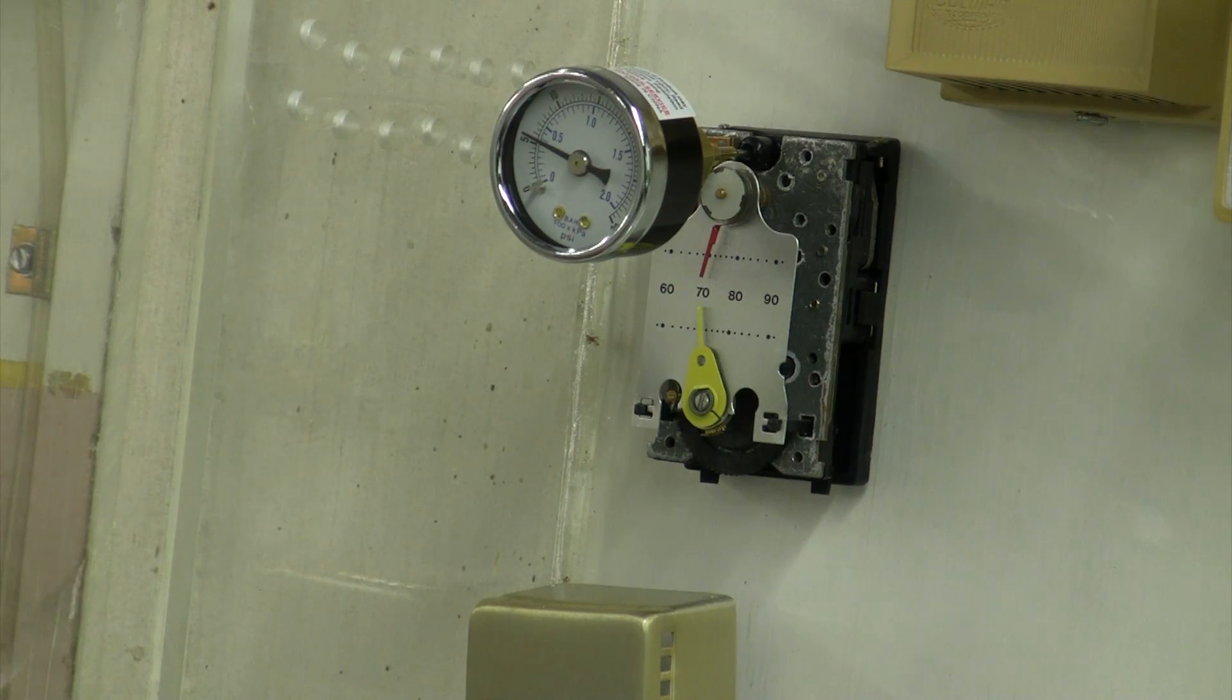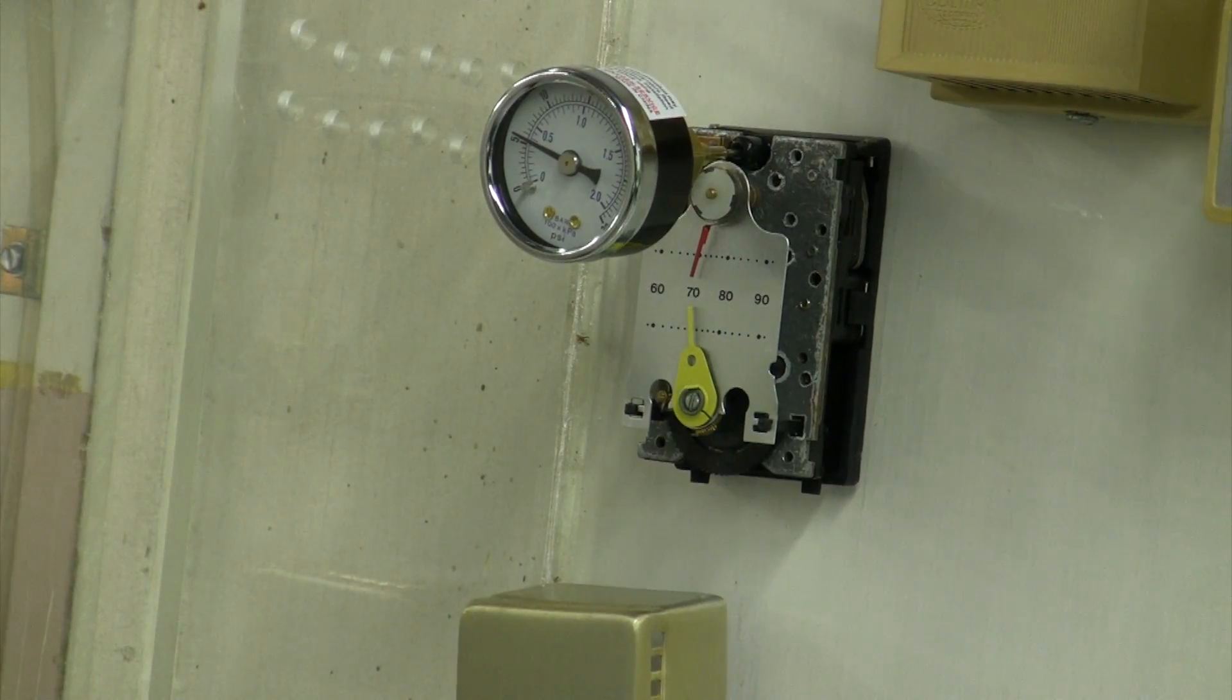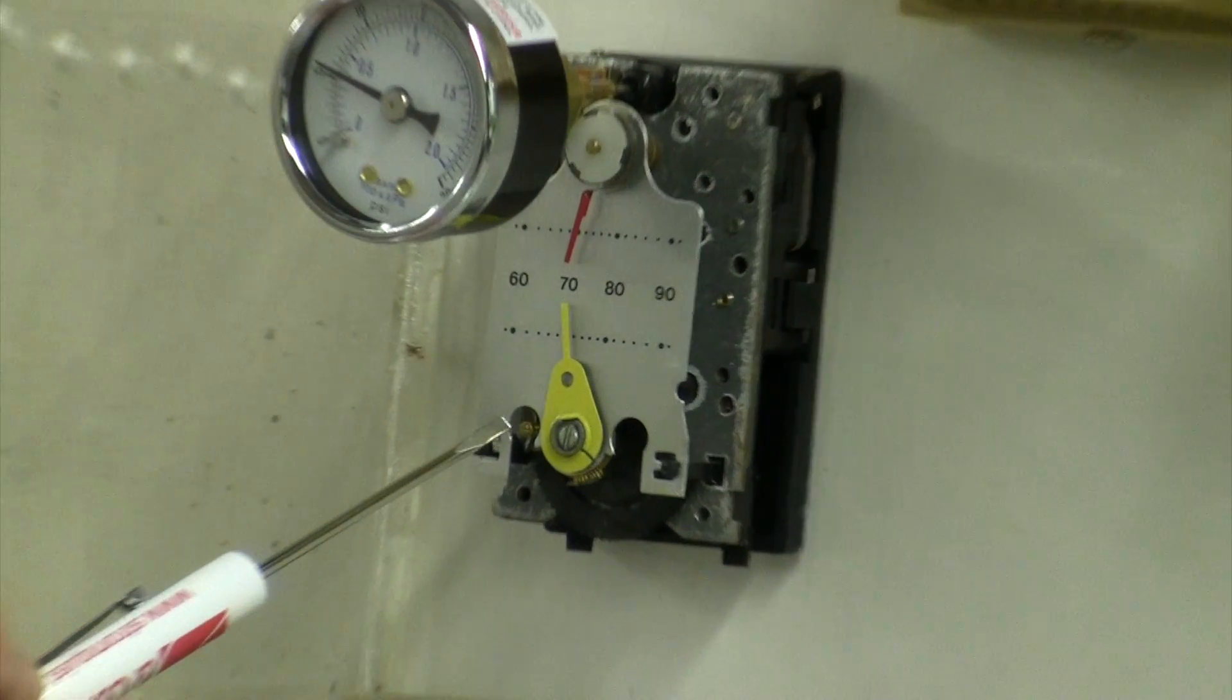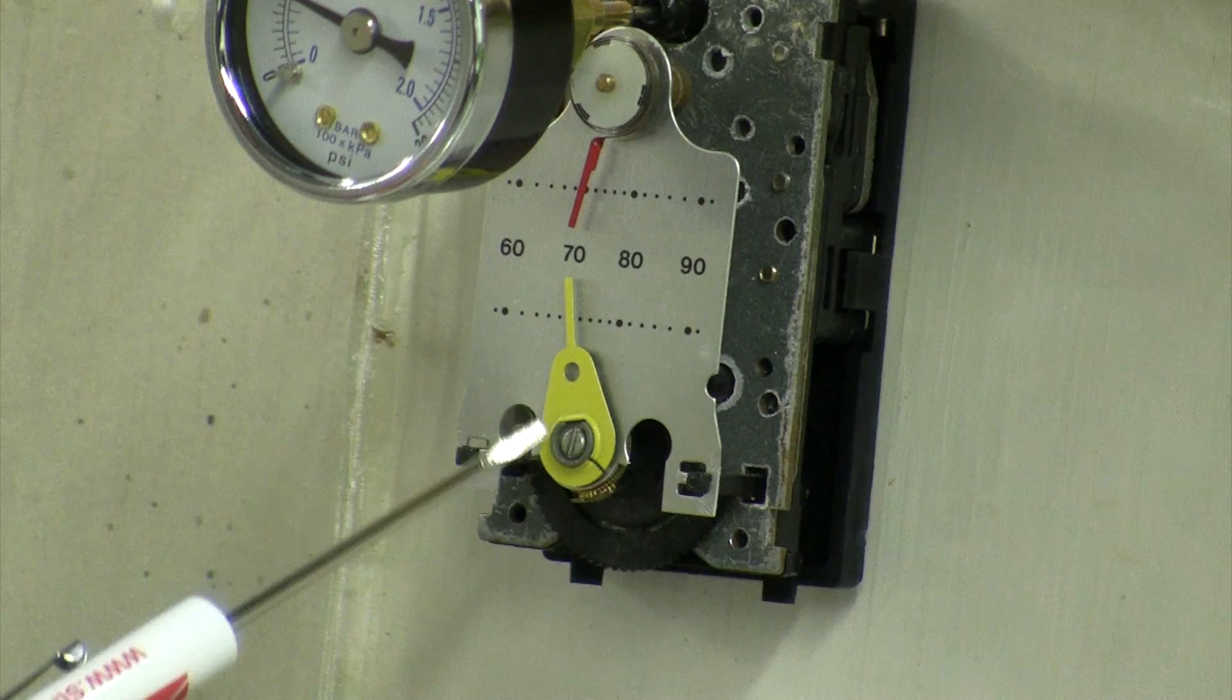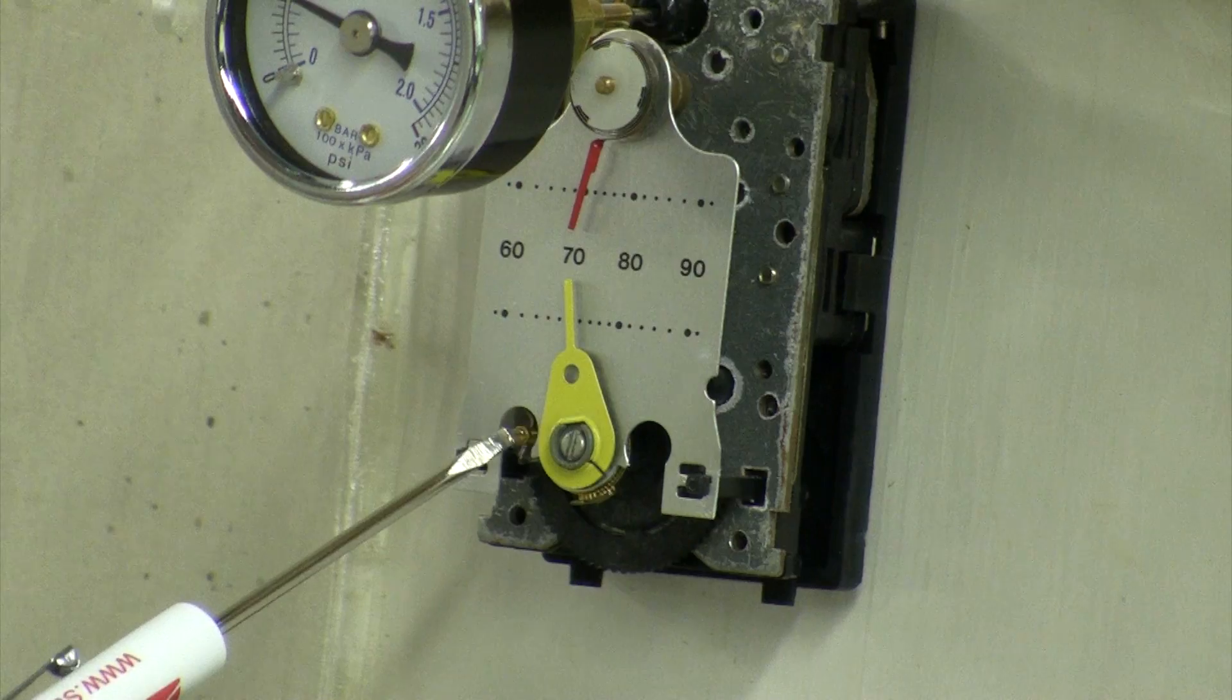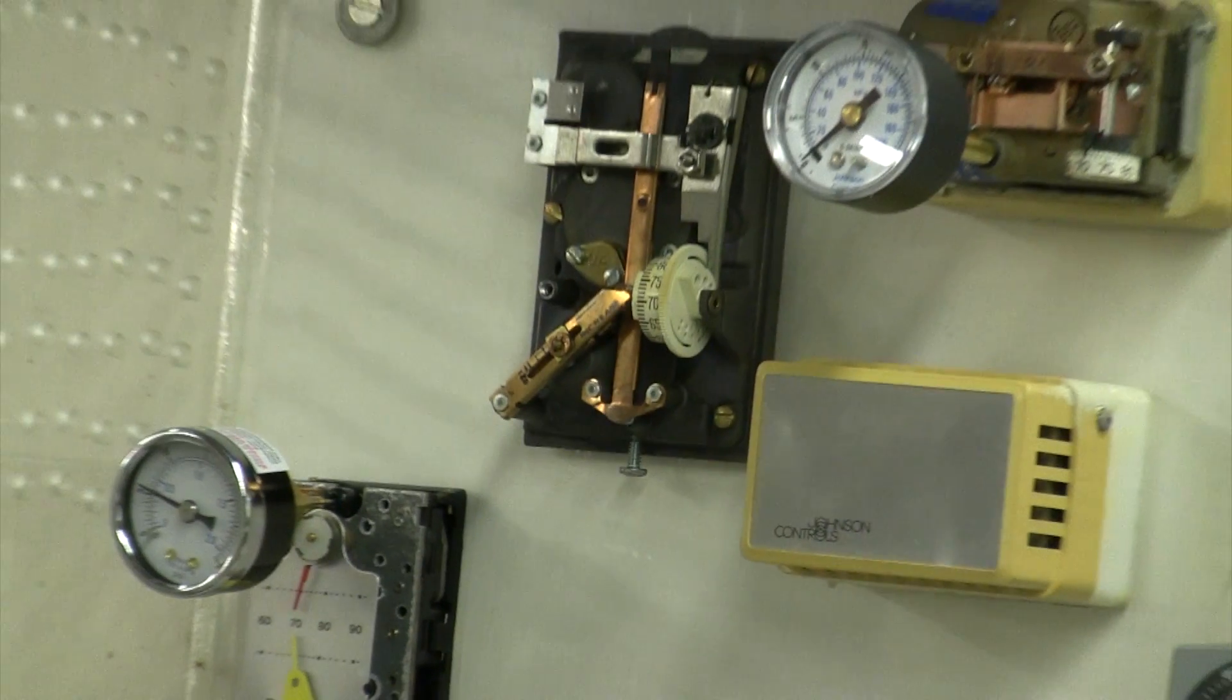The key to calibrating a pneumatic thermostat is to know where the calibration screw is, and it varies for the different brands. The Honeywell calibration screw is right here, just to the left of this set point indicator dial, and it's a little flat head screw. Let's take a look at the Barbara Coleman.